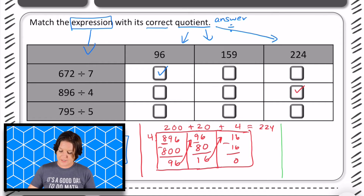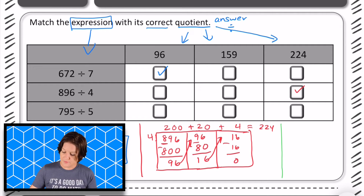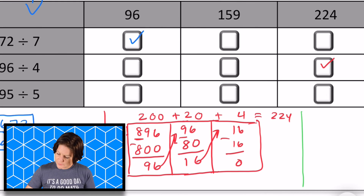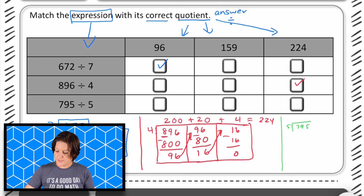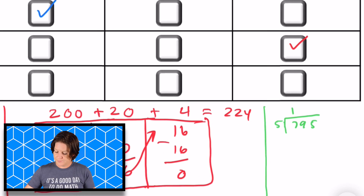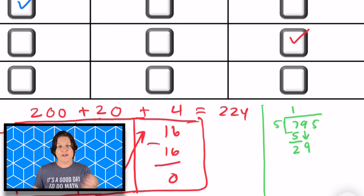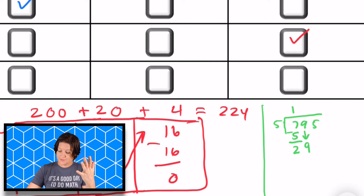For the last one, I have 795 divided by five. I'll go ahead and use long division. You can see you can use a bunch of different strategies. So we have our divisor outside and 795 inside. Five goes into seven one time, which is five. Subtract and we get two. Bring down the nine. Five goes into 29 — counting up: 5, 10, 15, 20, 25 — five times, which is 25. Subtract and we get four.